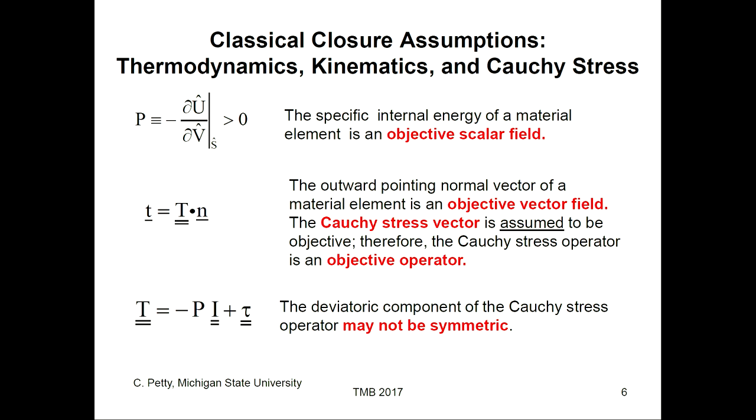For example, the classical assumption is that the absolute pressure is related to the internal energy per unit mass — this is an objective scalar field because we assume it is, and it works. The Cauchy stress vector is related to the normal vector of a material element, which is kinematically an objective vector field. We assume the Cauchy stress vector is objective — that's an assumption, not something given. As a consequence, you can prove the Cauchy stress is an objective operator, and whether it's symmetric is an additional assumption.